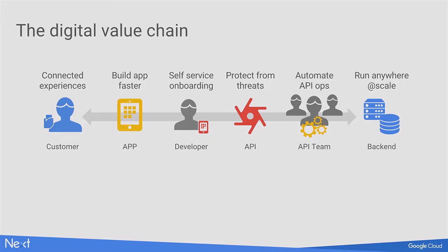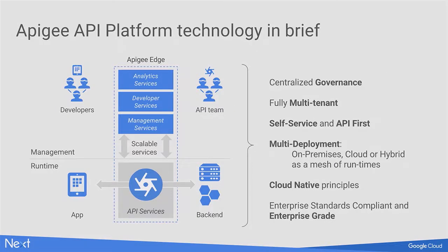The API layer sits on top of any back-end system you may have. Between the application and the API itself, we have a set of runtime services where we can insert policies — security, rate limiting, and more. There's also a management component that supplies both a user interface and an API for manipulating all of these components, programming the proxies, and configuring developers and applications. Everything done in the UI has an associated API as well.